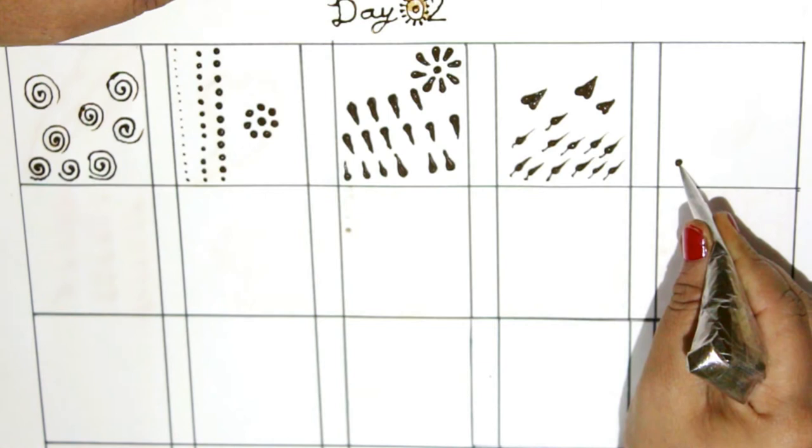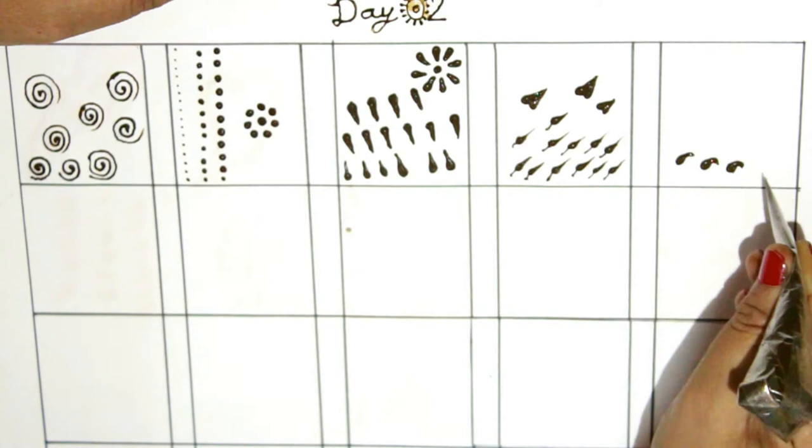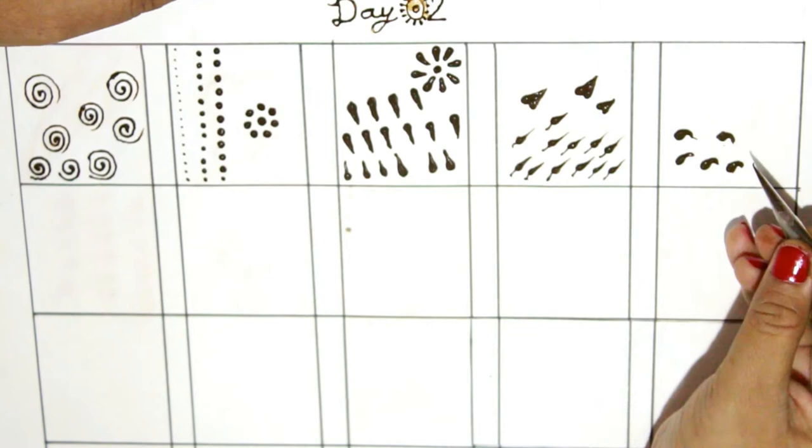The fifth design will be of tiny curves. These are also called Kari in Hindi which means unripe mango.